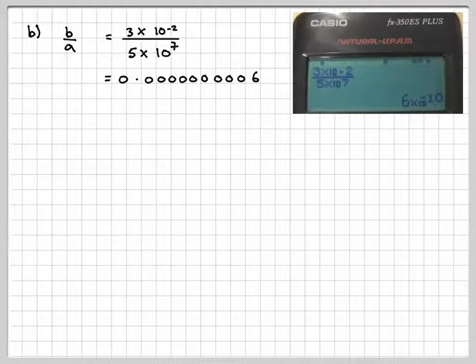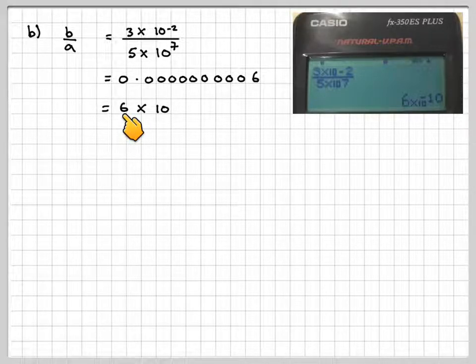So what you need to do is remember it's standard form - the first number is the number between 1 and 10. And this is 10. So how many times have I moved the decimal point? 1, 2, 3, 4, 5, 6, 7, 8, 9, 10.